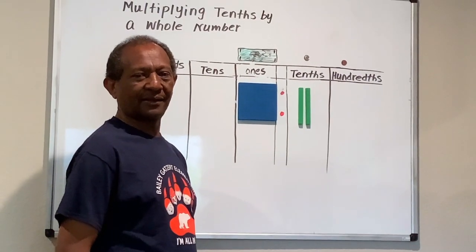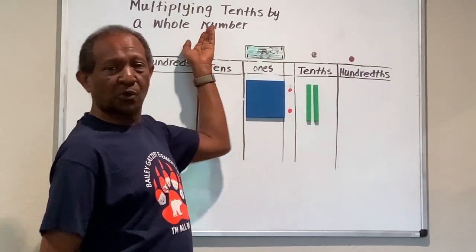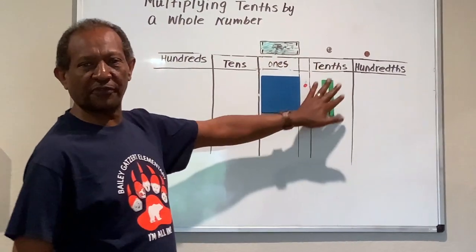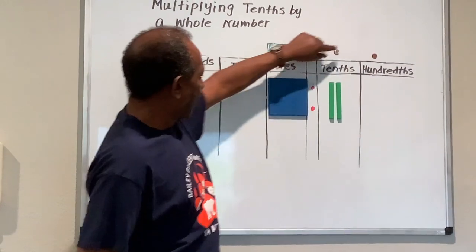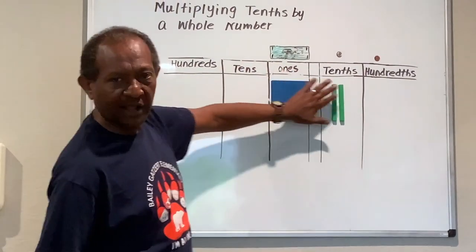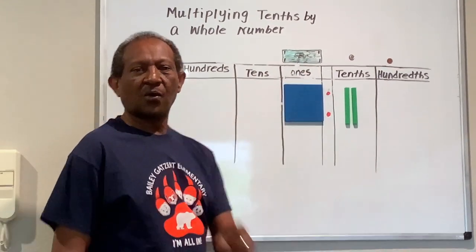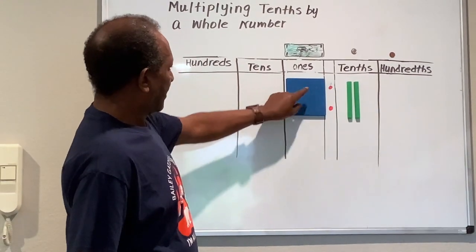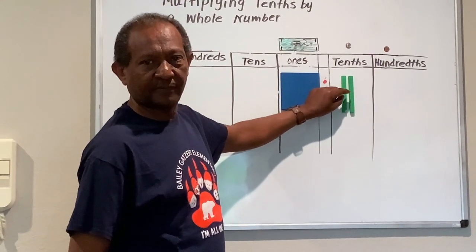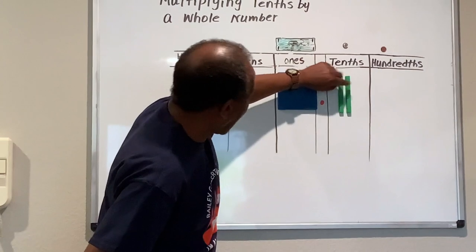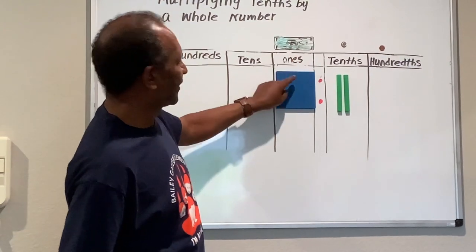Hello students. Today our learning is multiplying tens by a whole number. To help us, I have two things here on the board: a dollar bill, a dime, and a penny. And on the bottom you see the base 10 blocks. This base 10 block represents one whole, and this one here represents tens, because 10 of these make one whole. There are 10 tens in one whole.